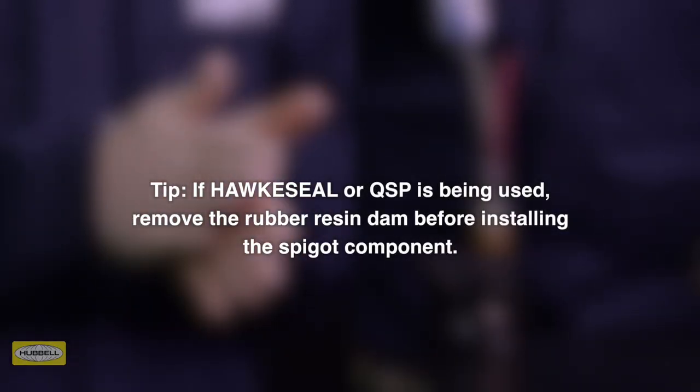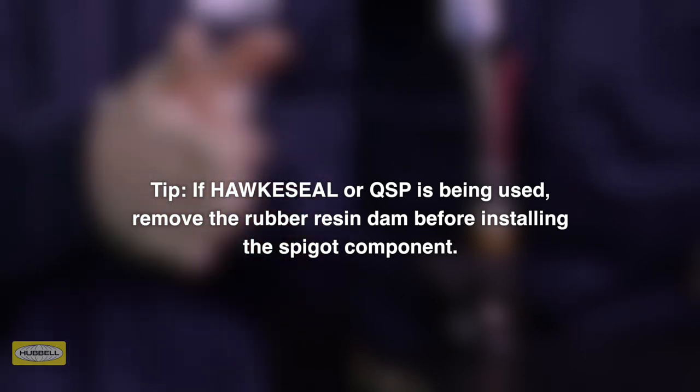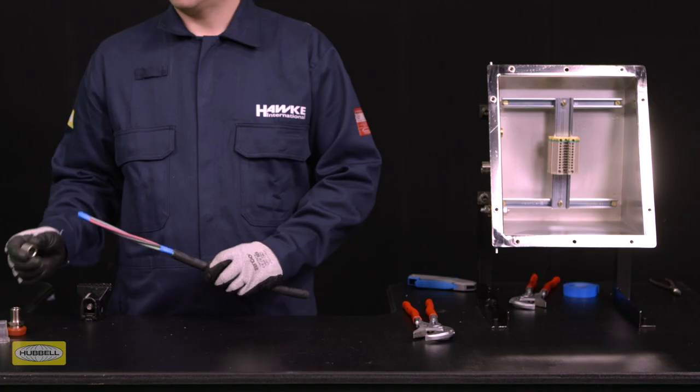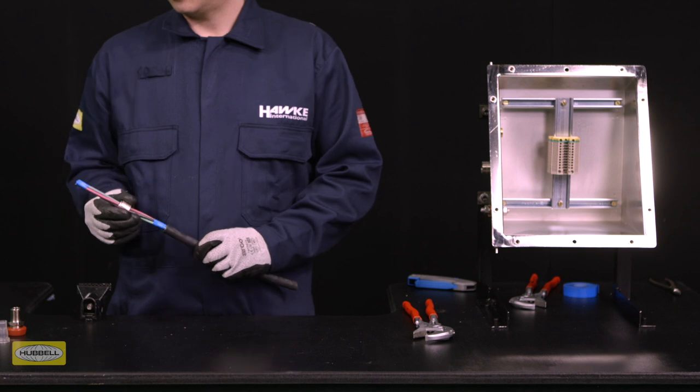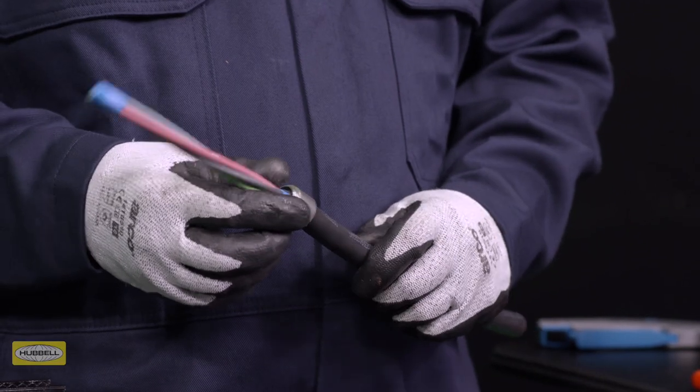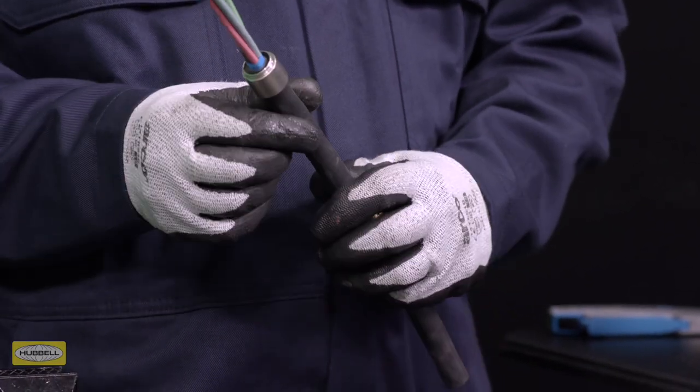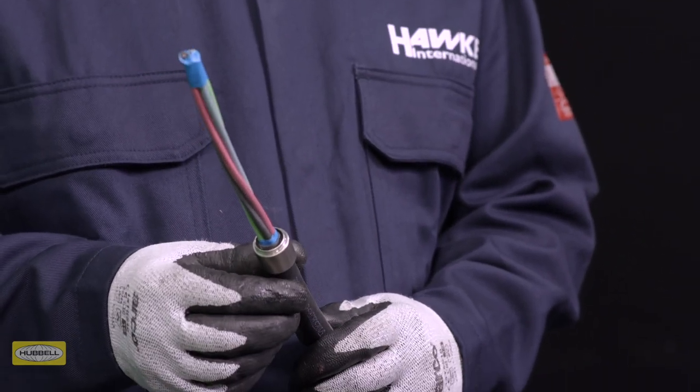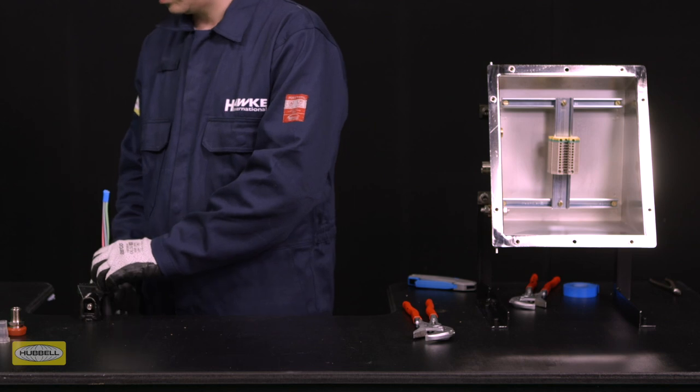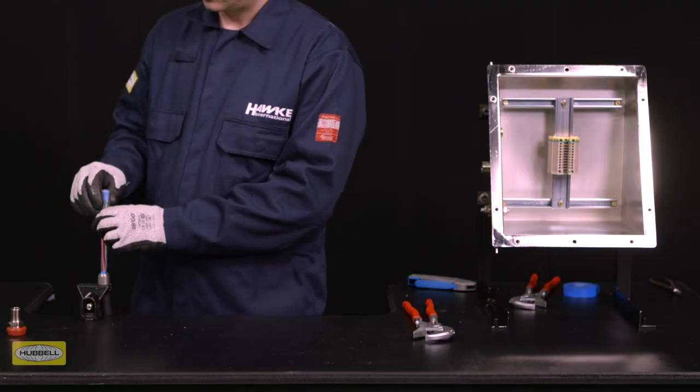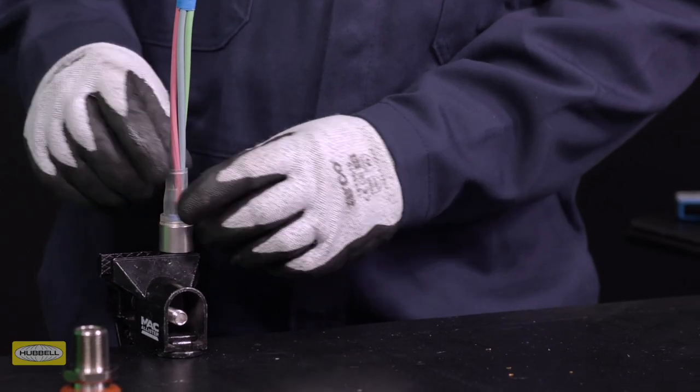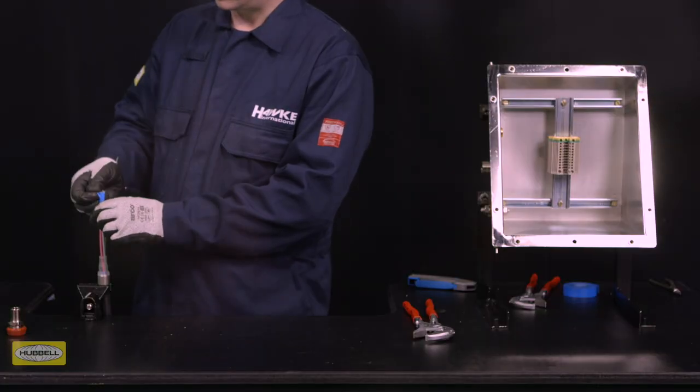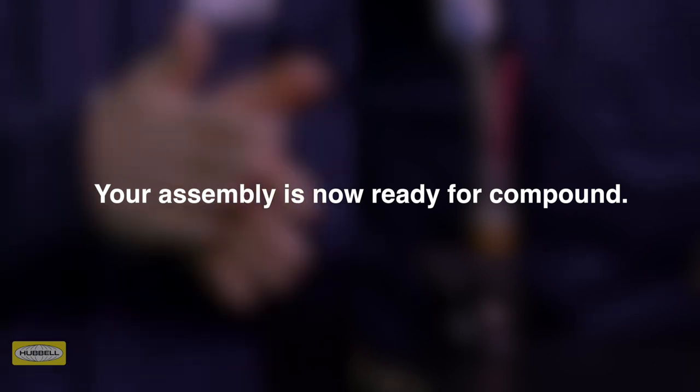If HAWC seal or QSP is being used, remove the rubber resin dam before installing the spigot component. Slide the spigot over the cable, taking care not to damage the rubber resin dam, until the rear end of the spigot is at the point where the inner sheath is stripped back. Fit the pot and check that the inner sheath is at the height of the pot shoulder. Your assembly is now ready for compound.